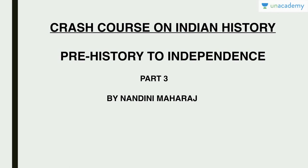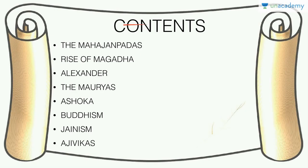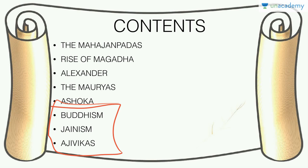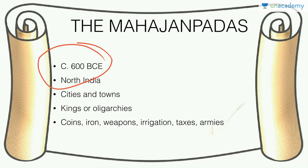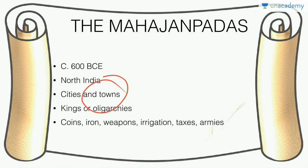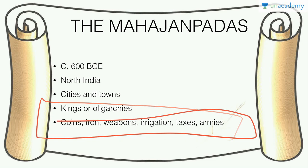In this lesson we'll talk about Indian history beginning from the early states, that is the Mahajanapadas. We'll cover the Mahajanapadas, the rise of Magadha, Alexander's invasion, the Mauryas and Ashoka, as well as diverse thought systems — Buddhism, Jainism, and Ajivikas. The Mahajanapadas were early states that began to develop around 600 BCE, mostly in North India — cities and towns — shifting from early Vedic hunter-gatherers or agriculturists to urbanization again.